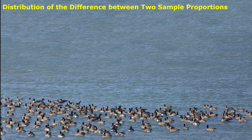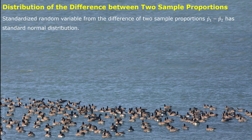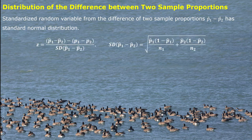Similarly, we can extend this idea to two populations. In that case, we are comparing two population proportions. We pick up a random simple sample from each population and come up with two sample proportions. p1-hat represents the first sample proportion from the first population, and p2-hat represents the sample proportion from the second population. The standardized difference of two sample proportions has standard normal distribution.